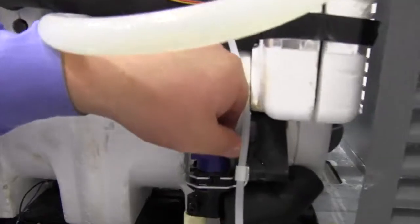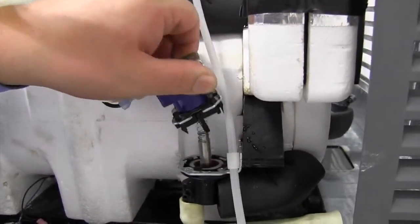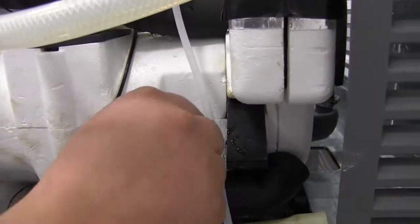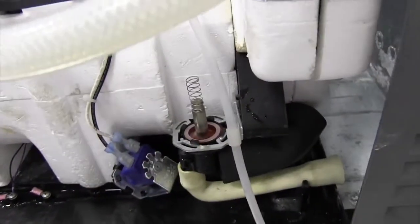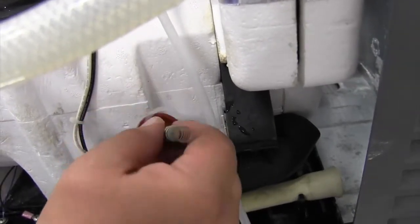All you have to do is turn this a quarter turn and pull the coil off the top. Inside here is your plunger and a little neoprene O-ring. You can pull that plunger out.